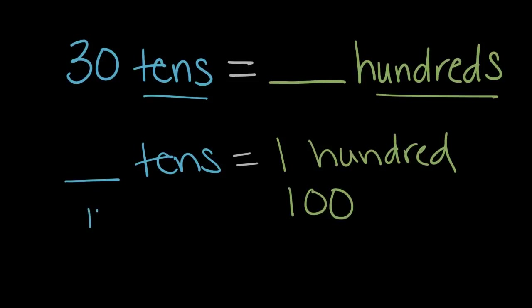One ten is ten, twenty, thirty, forty, fifty, sixty, seventy, eighty, ninety, one hundred. So we got to a hundred and it took us ten tens. There are ten tens in one hundred.